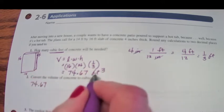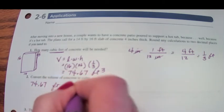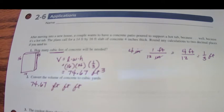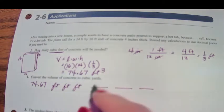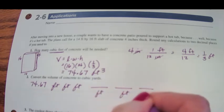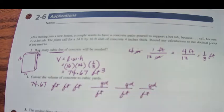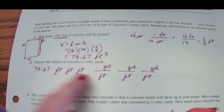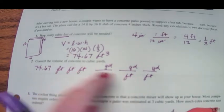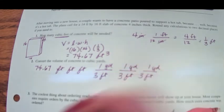74.67 feet times feet times feet - that's cubic feet. And we want our answer to be cubic yards. We're going to need to multiply by 3 fractions that have feet in the denominator, but have yards in the numerator. Why 3? I need a foot in the denominator for those to cancel. We know that 1 yard has 3 feet, 1 yard has 3 feet, 1 yard has 3 feet.